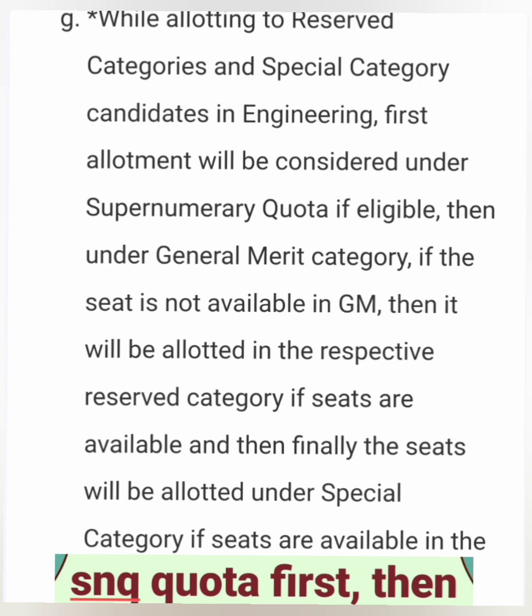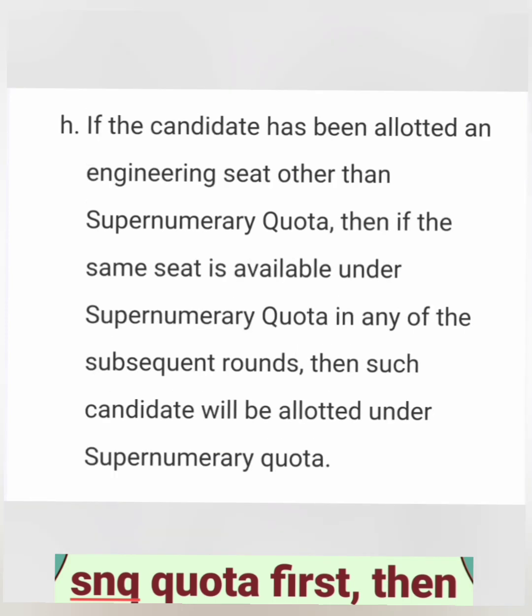For any reserved or special category, the process always begins with SNQ quota — if your income is less than six lakhs, you get the SNQ quota seat with lower fees. This applies to general students too: if a general student's parent's salary is less than six lakhs, they can get SNQ quota seats at lesser fees. Then it checks general category allotment, and lastly, it provides reserved or special category seats.